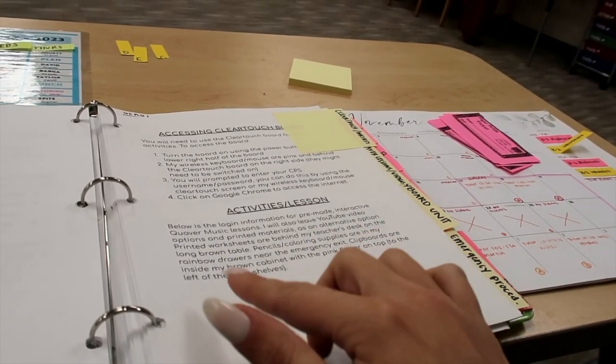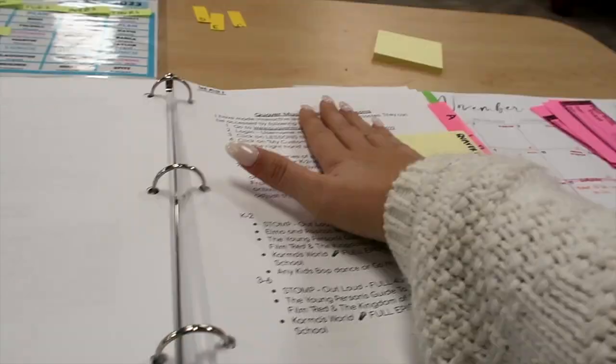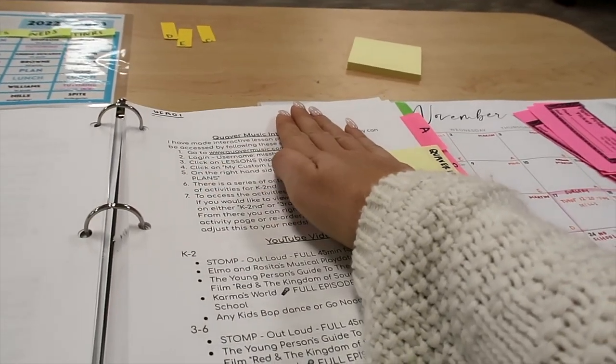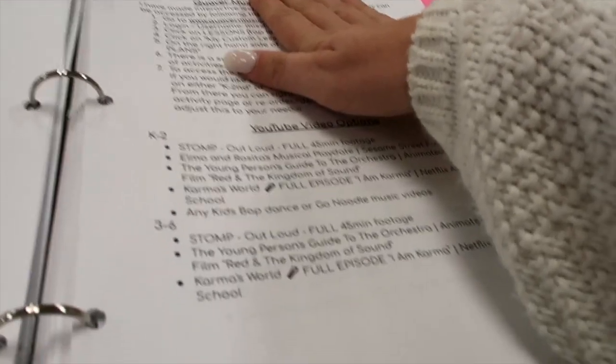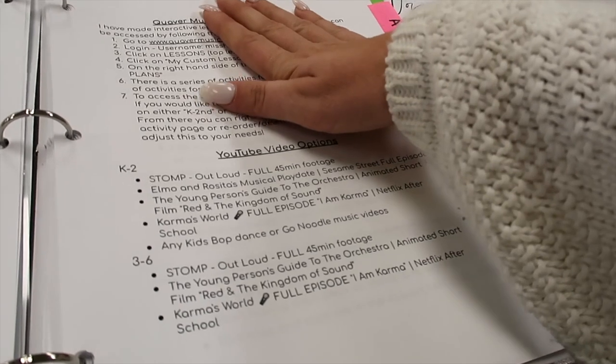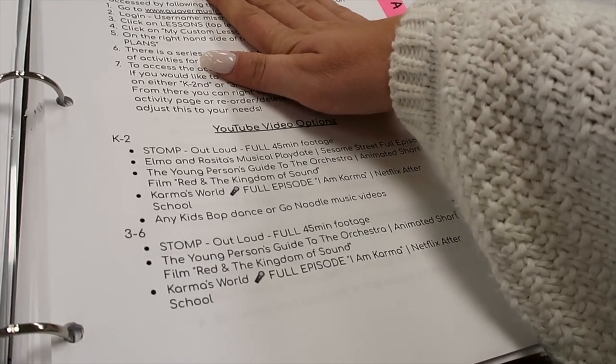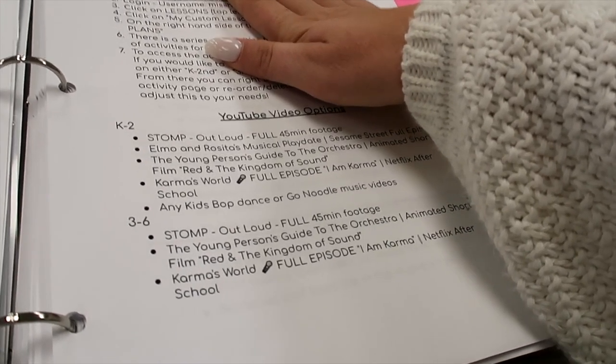Printed worksheets are... that's not true, but whatever. She'll figure that, I'll tell her that verbally. So the clipboards are here, the pencils are there. Here's my Quaver login information. It just tells her how to log in, how to find the lessons. And then here's a list of YouTube videos that I don't mind her showing them if she wants to show a YouTube video.